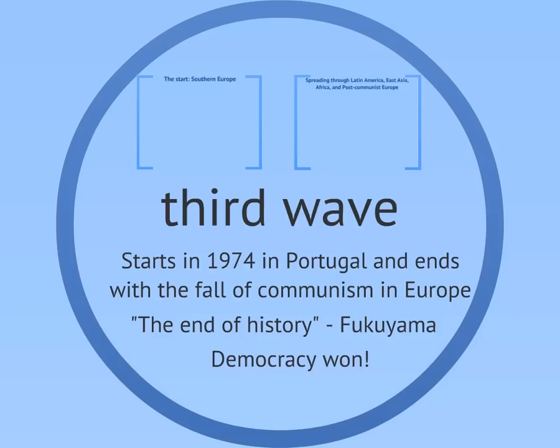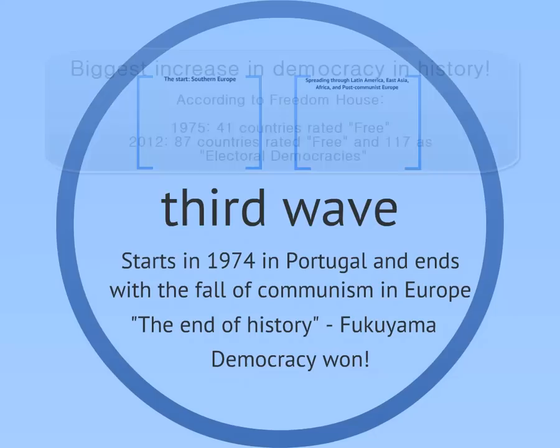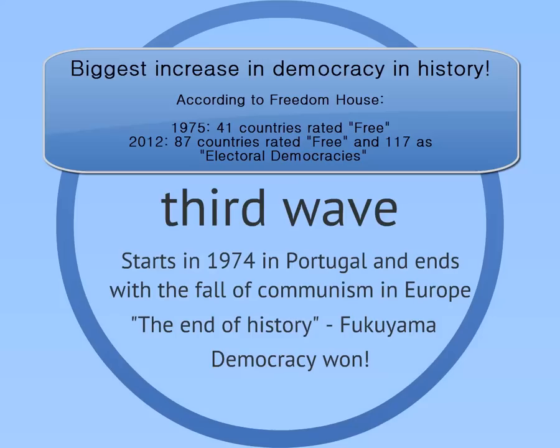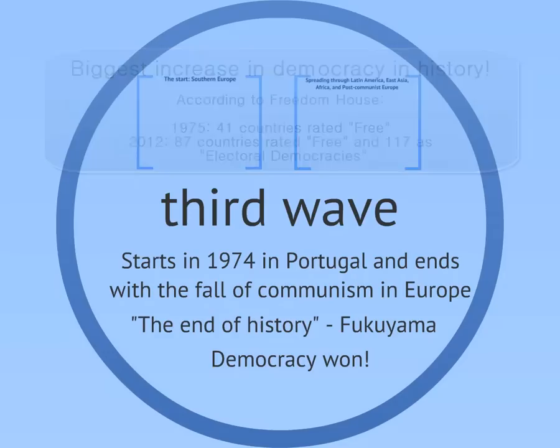Finally comes the third wave, which is the largest wave of democratization involving a huge number of countries. It started in 1974 in Portugal with the Carnation Revolution that overthrew that country's military dictator, and spread so widely that by the end of the Cold War, a political scientist named Francis Fukuyama declared the end of history. Of course, he didn't mean that nothing would ever happen again, but that the real ideological debates had all given way to a universal recognition of democracy and liberal egalitarian values as best. We'll see that this was quite premature, but at the time there was so much dramatic democratization happening that we can see why he might have jumped to such a conclusion.